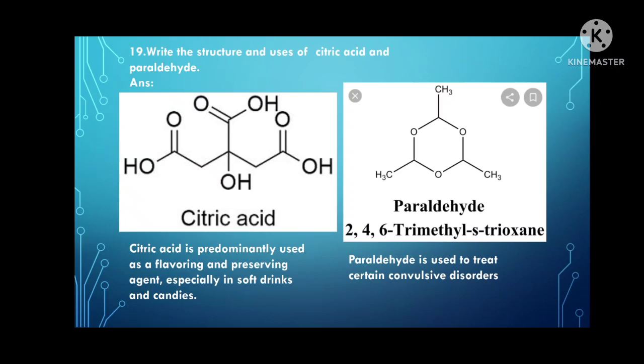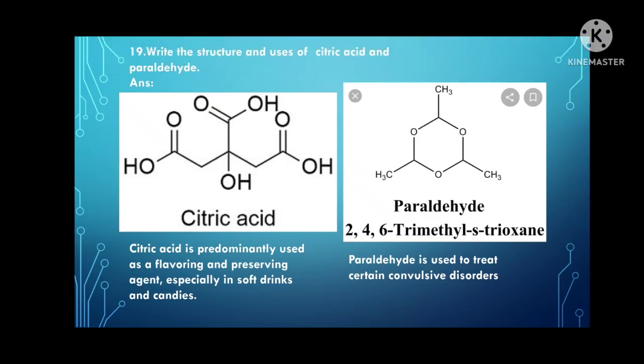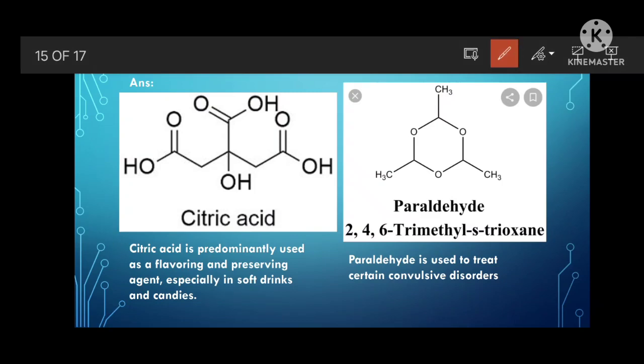Write the structure and uses of citric acid and paraldehyde. Citric acid is predominantly used as a flavoring agent and preserving agent, especially in soft drinks and candies. Paraldehyde is used to treat certain convulsive disorders, particularly brain disorders.